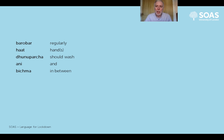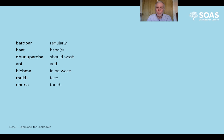'Bichma' means 'in between things'. 'Mukh' is the noun meaning 'the face'. 'Chunna', from 'chunnu', means 'to touch' - and 'chunna hundayna' was used in the dialogue, so 'it's not right to touch'.